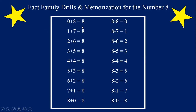Say these equations and answers with me. Are you ready? Let's go. Zero plus eight equals eight. One plus seven equals eight. Two plus six equals eight. Three plus five equals eight. Four plus four equals eight. Five plus three equals eight. Six plus two equals eight. Seven plus one equals eight. Eight plus zero equals eight. Good job!